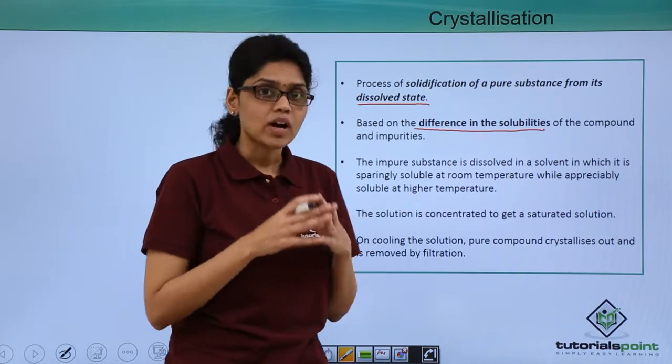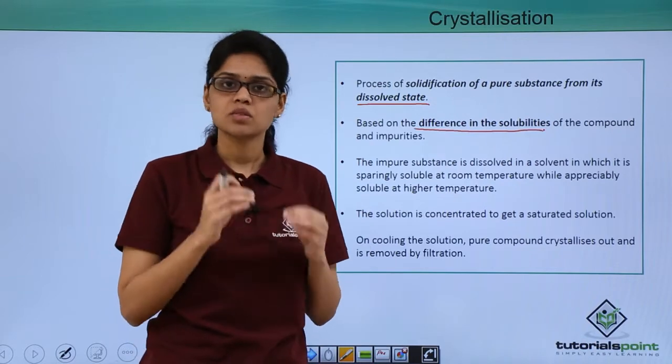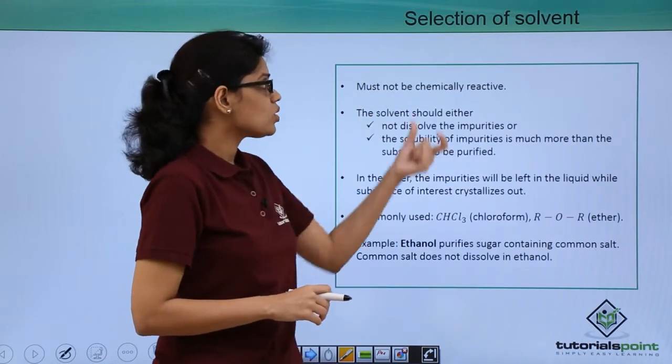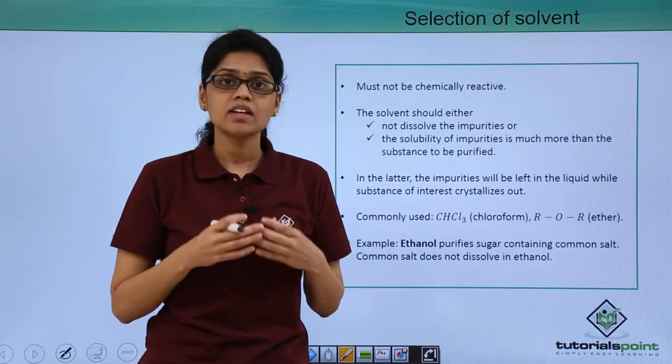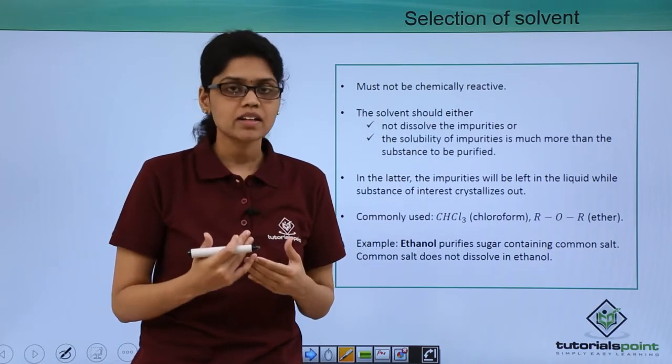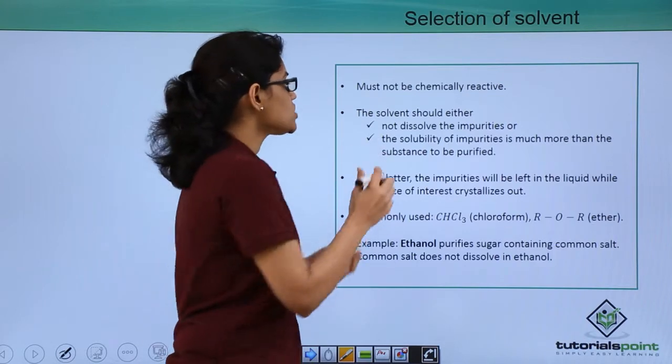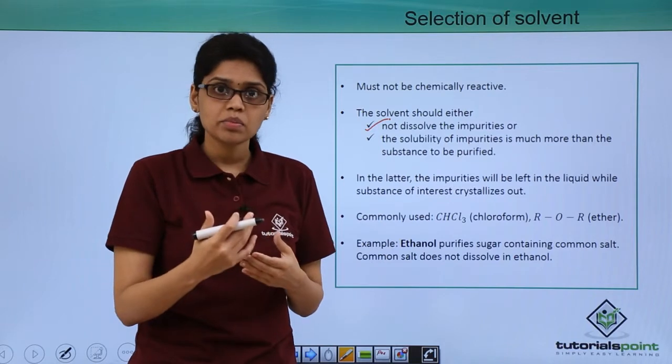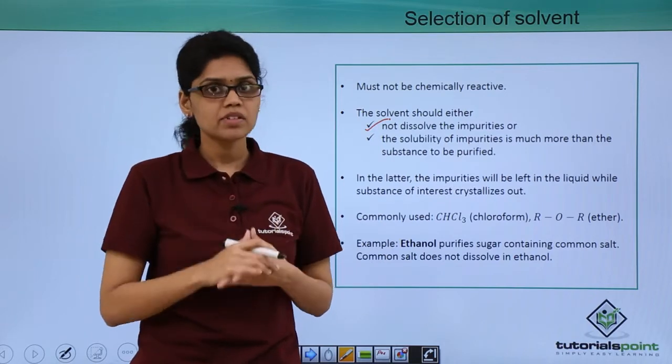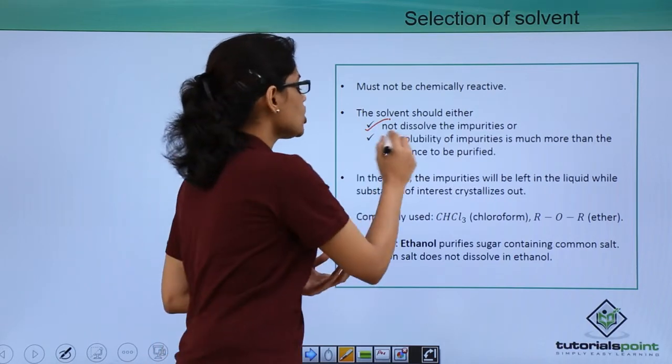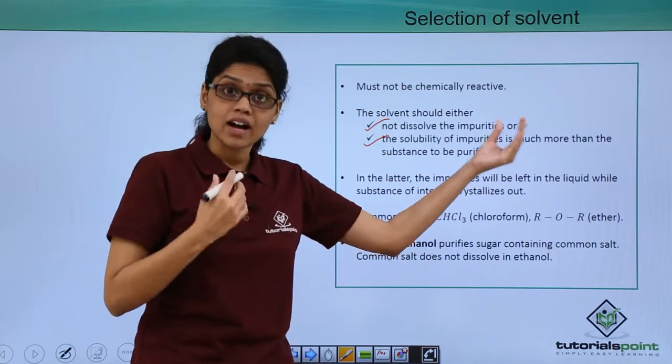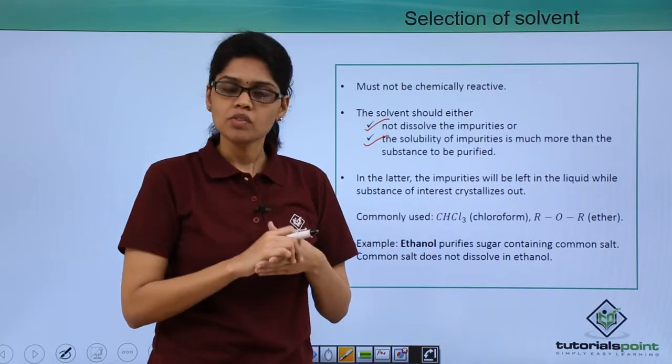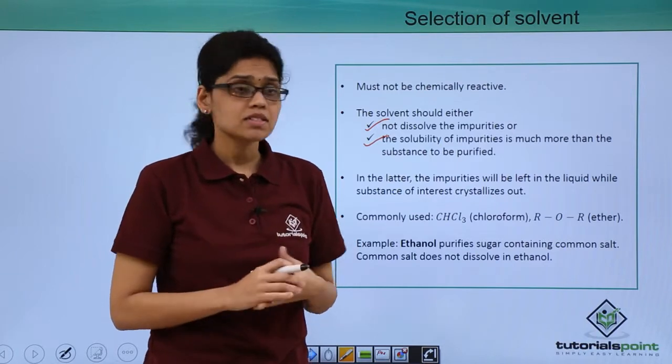The first step is to identify a suitable solvent. The suitable solvent should be chemically inert or chemically unreactive with other compounds. The solvent should either not dissolve the impurities so that insoluble impurities can be easily removed by filtration, or the solubility of impurities should be much more than the solubility of the pure compound of interest.